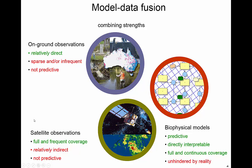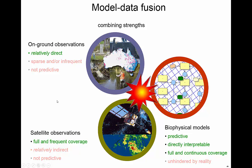Satellite observations don't tell us about the future either, but they have the benefit of full and frequent coverage. So we can fill the gaps and interpolate between observations at the Earth's surface. That way, we can also deal with the weaknesses of satellite data, which is often looking at electromagnetic properties — often not exactly what we want to know — and again, they're not predictive. We still need our models for that. But by combining these three approaches, we can hopefully reduce each of these individual weaknesses, and that's what we mean by model data fusion.